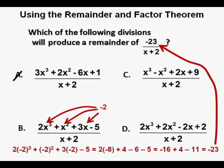And since that negative 23 matches our remainder of negative 23 over x plus 2, that makes B our correct answer, which we circle as correct. This way of finding remainders is much shorter, plus avoids many opportunities for errors in calculations.